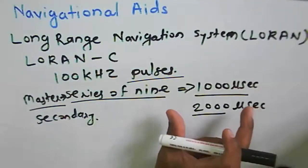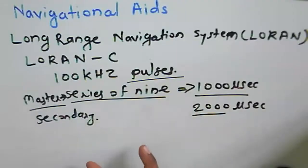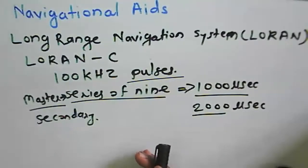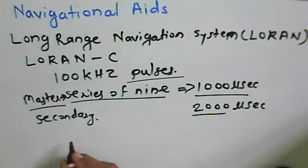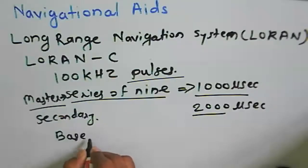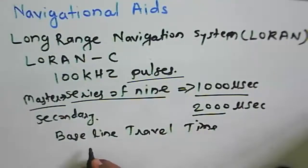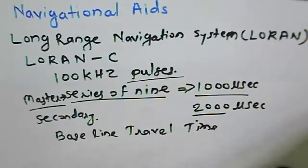Once the nine pulses are transmitted by the master, the secondary will then transmit its signal. The total elapsed time from the master transmission until the secondary emission starts includes the delay. The time required for the signal to travel from master to secondary is called the Baseline Travel Time (BTT). This duration is related to the baseline length between stations.